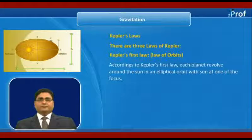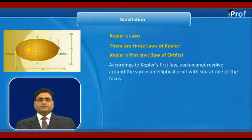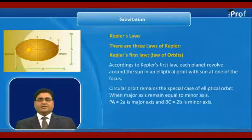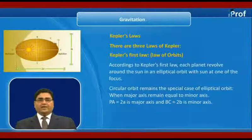Circular orbit remains the special case of elliptical orbit when major axis remains equal to minor axis.